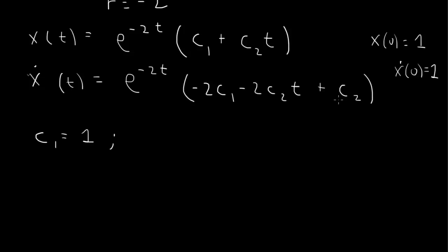And then x dot of 0 equal to 1, so e to the 0 is 1, the t is 0, so we'll have minus 2c1 plus c2 equal to 1. So c2 is 1 plus 2c1. 1 plus 2 will give us a 3.